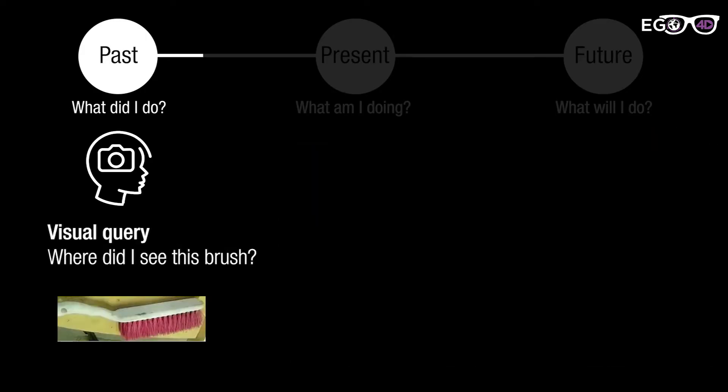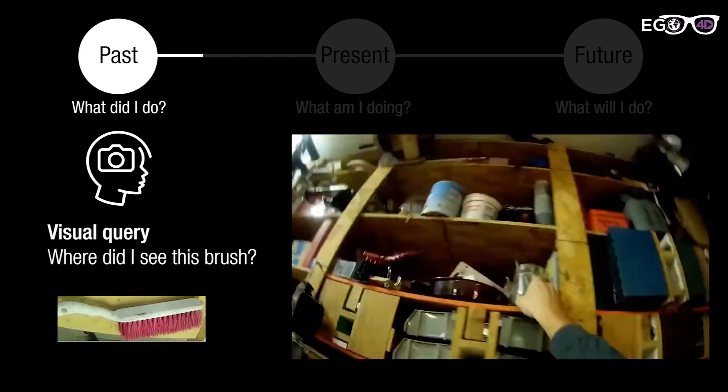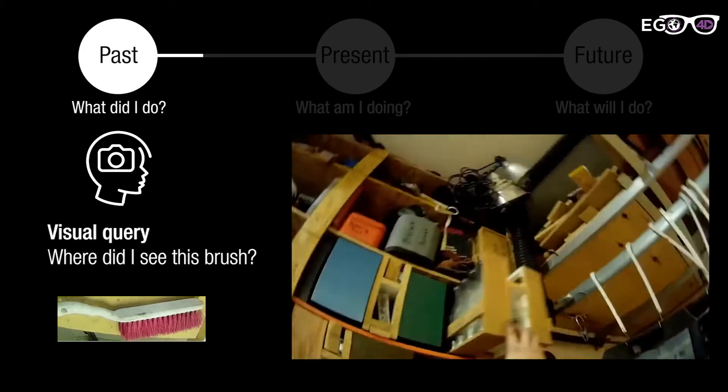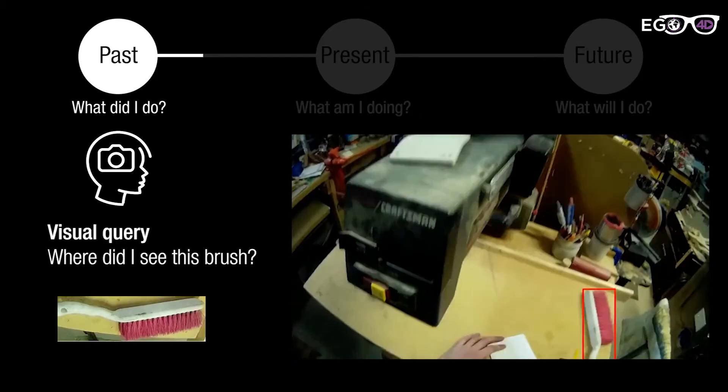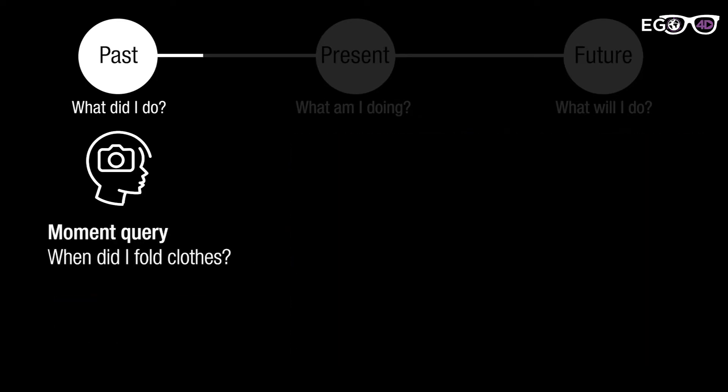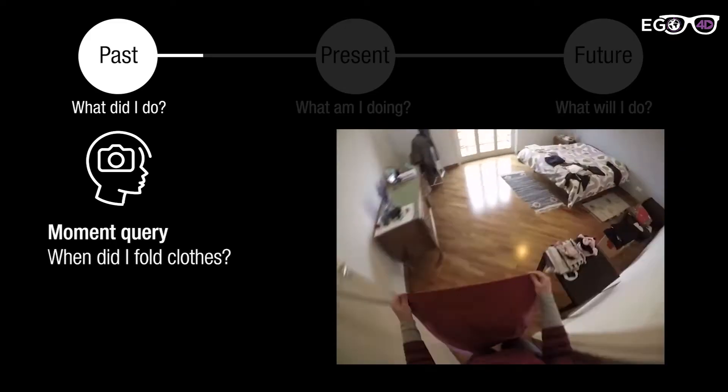Similarly, a visual query task is to localize the object of interest by reviewing videos. Here we are asked to find a brush. The episodic memory task also includes moment query, temporally localizing the activity of interest. For example, when did I fold clothes?